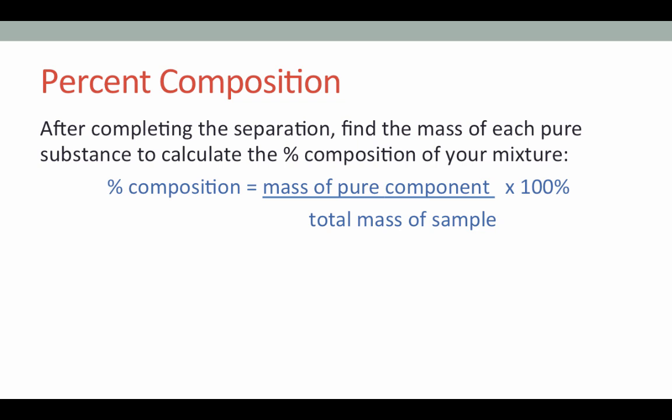All right, now that you've successfully separated your mixture into three pure substances, it's time to determine the percent composition of each of those substances in the original mixture. Percent composition is calculated by dividing the mass of each pure component by the total mass of the sample and then multiplying by 100%. You will take the mass of each component, let's say sand, and then divide that by the original mass times 100%, and then acetanilide divided by the total mass times 100%, and then salt, and hopefully the sum of your percentages will all add up to 100%.